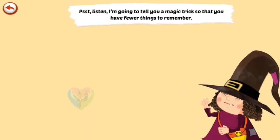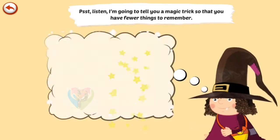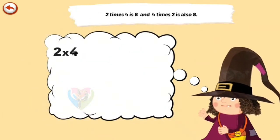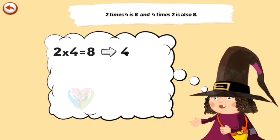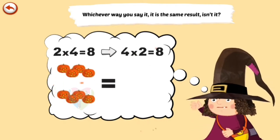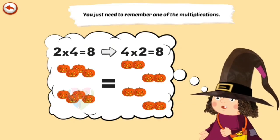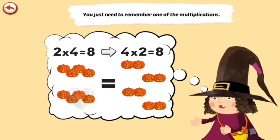Psst, listen, I'm going to tell you a magic trick so that you have fewer things to remember. 2 times 4 is 8, and 4 times 2 is also 8. Whichever way you say it, it is the same result, isn't it? You just need to remember one of the multiplications.